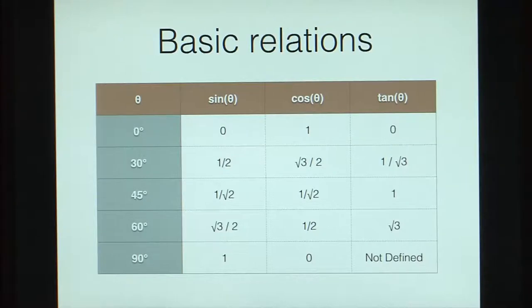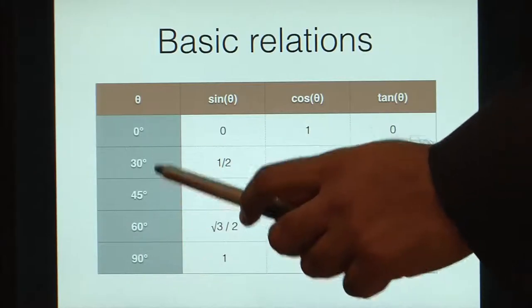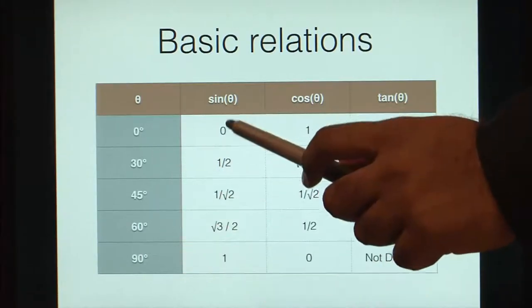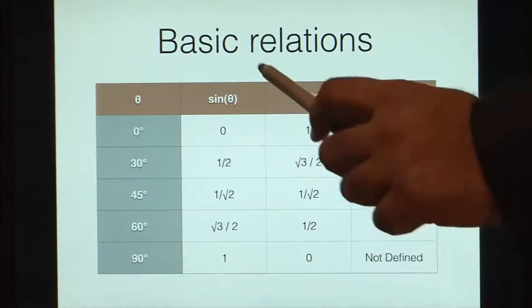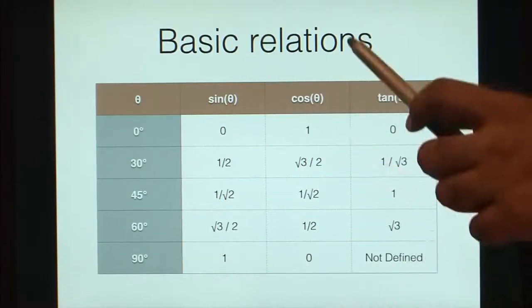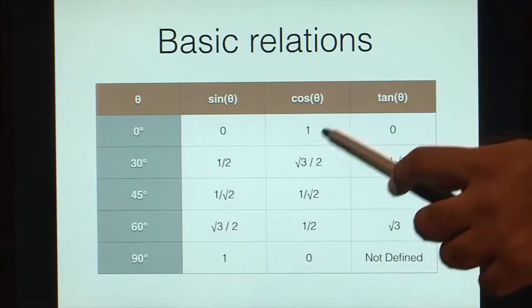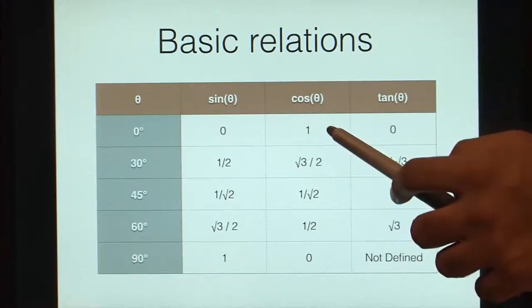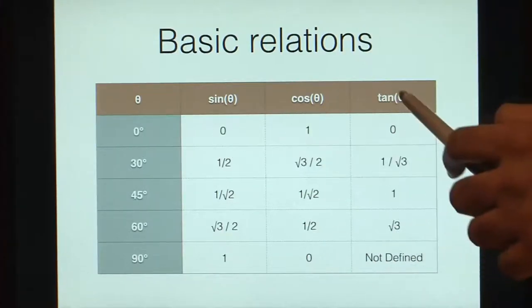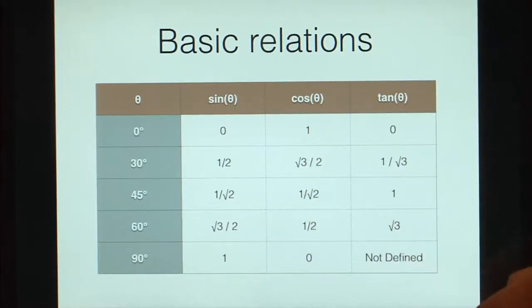For the standard angles 0°, 30°, 45°, 60°, and 90°, sin θ takes values 0, 1/2, 1/√2, √3/2, and 1. For cos, you write it in the opposite direction. You can calculate tan values by dividing sin by cos — so 0/1 = 0, (1/2)/(√3/2) = 1/√3, and so on. These are values you should remember.